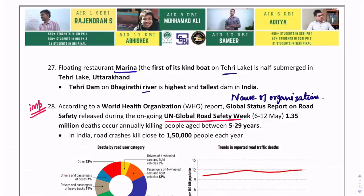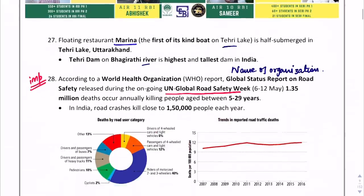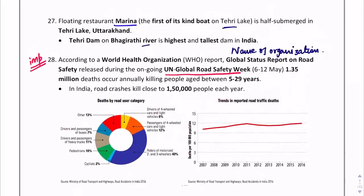The next question is about the organization that released the Global Status Report on Road Safety. Also, when was the UN Global Road Safety Week observed? The answer is 6th to 12th May. The Global Status Report on Road Safety was released by WHO.